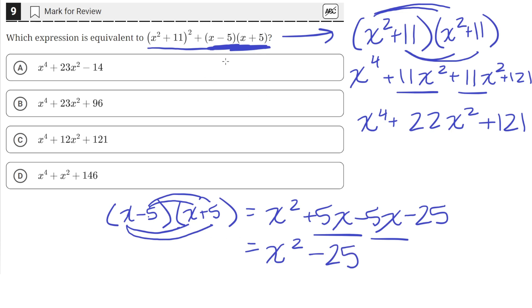So now we've simplified both these terms, so let's add up this with that. And we can see that the x to the fourth, here I'll do it inside here. So x to the fourth stays the same, since there's no other x to the fourth.